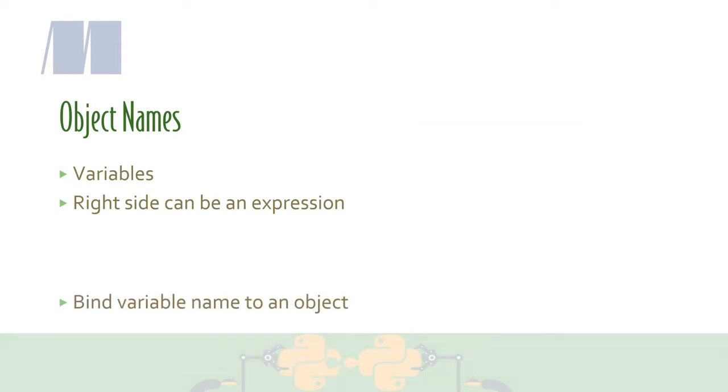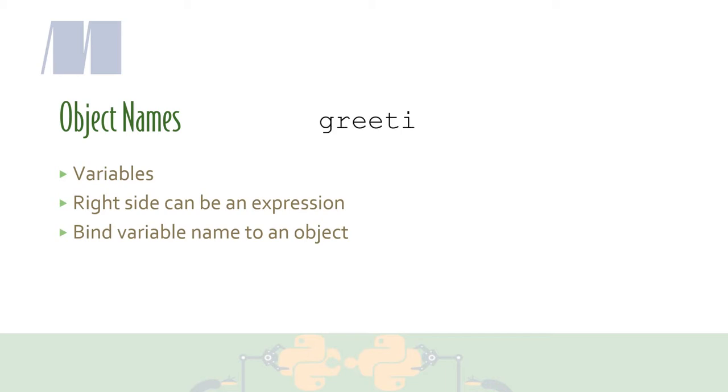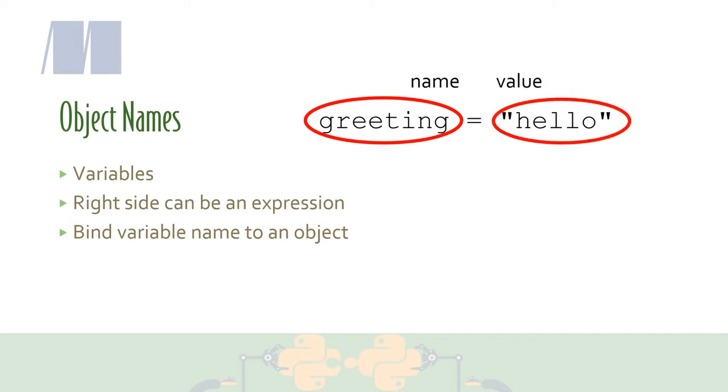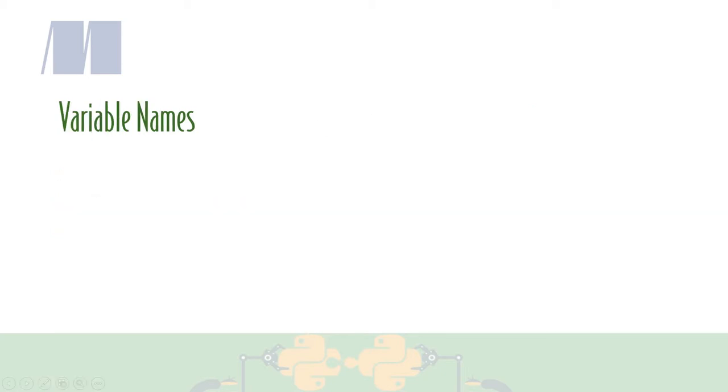In Python, you bind a variable name to an object. If greeting is equal to hello, then the object named greeting has a value of hello, which is a sequence of characters. Operations that you can do on greeting might be tell me how many characters it has, or tell me if it has letter A in it, or tell me at which position the first E occurs.